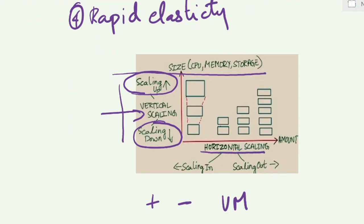Then there is something called horizontal scaling. Here the amount of VMs, the number of VMs, we are increasing or decreasing. Scaling in is where you decrease the number of VMs. Scaling out is where you increase the number of VMs. Now that you understand what is scaling, it is very easy to understand rapid elasticity because rapid elasticity is nothing but dynamic scaling. So you don't have to do it manually, but automatically the scaling happens as per the demand.